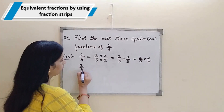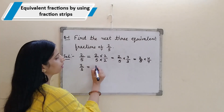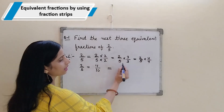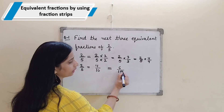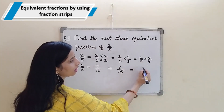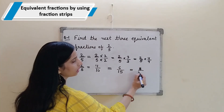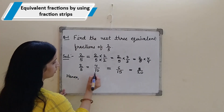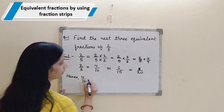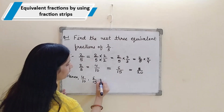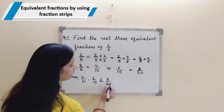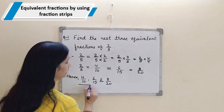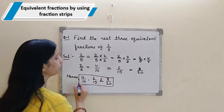So here it is 2 upon 5. Here we will get 2 times 2 is 4 and 5 times 2 is 10. Then 2 times 3 is 6 and 5 times 3 is 15. And here 2 times 4 is 8 and 5 times 4 is 20. Hence 4 upon 10, 6 upon 15, and 8 upon 20 will be the equivalent fractions of 2 upon 5.